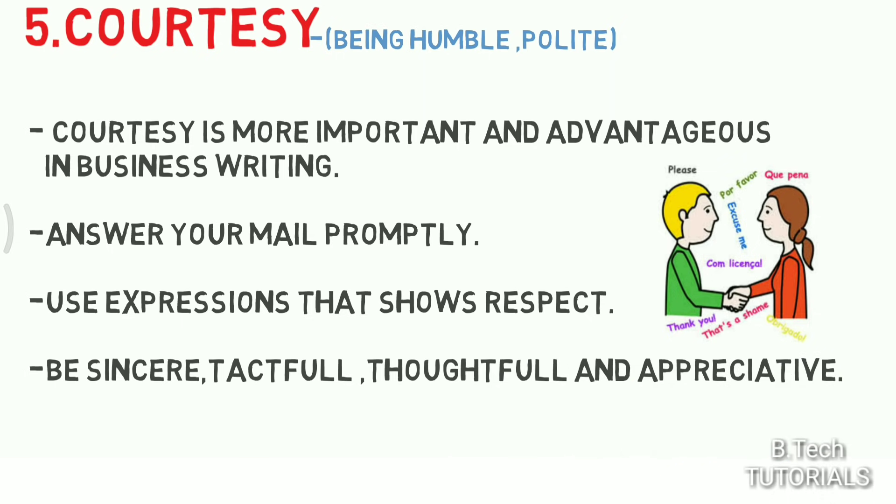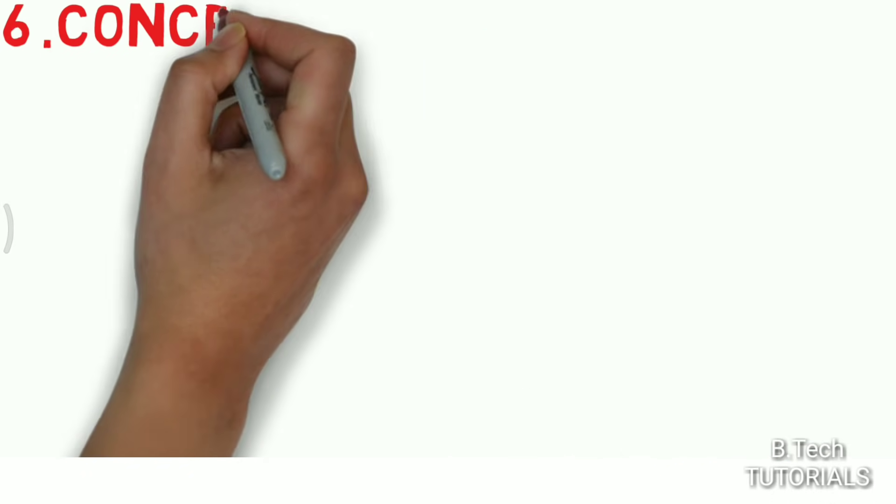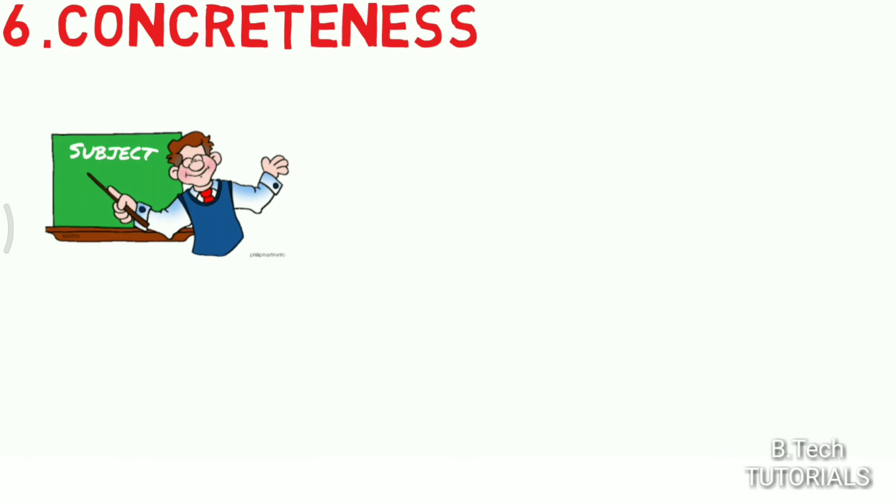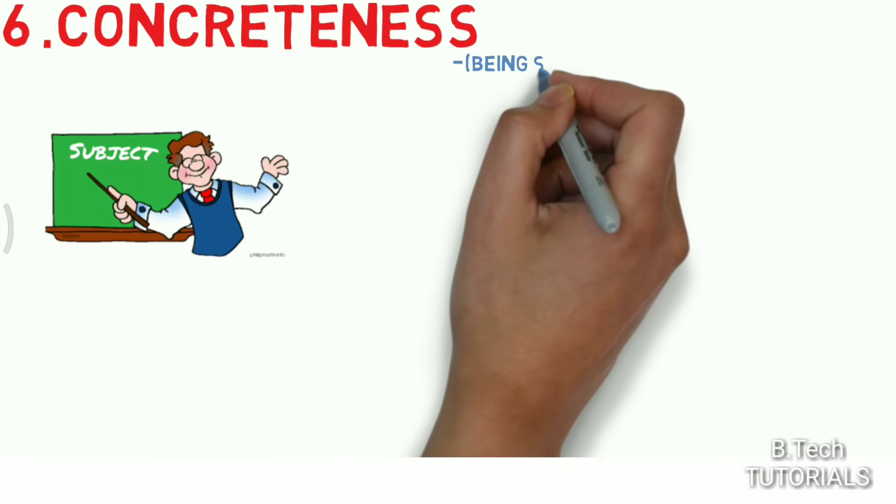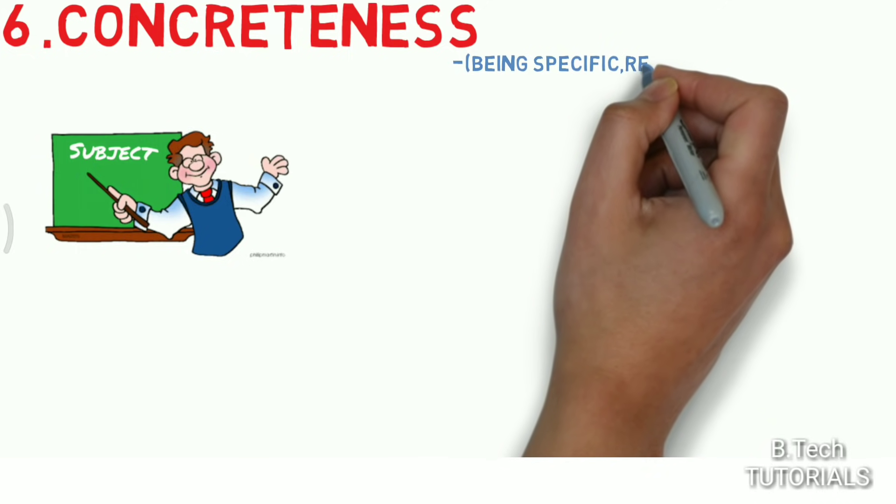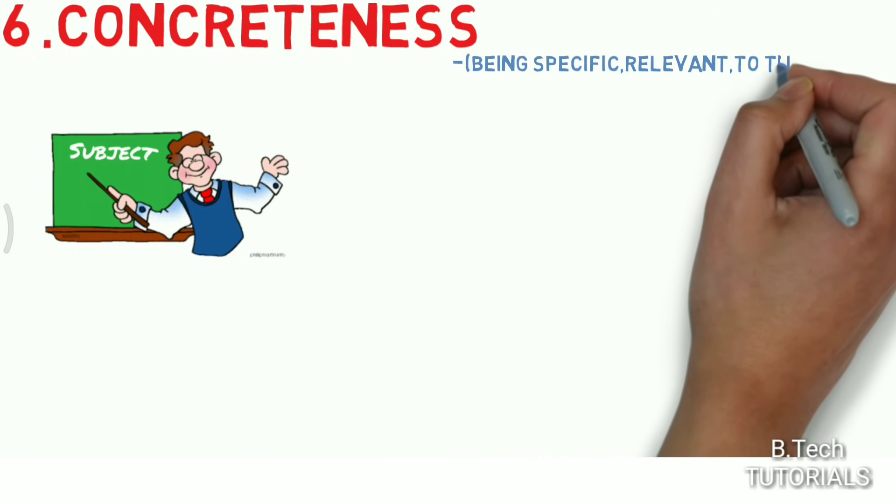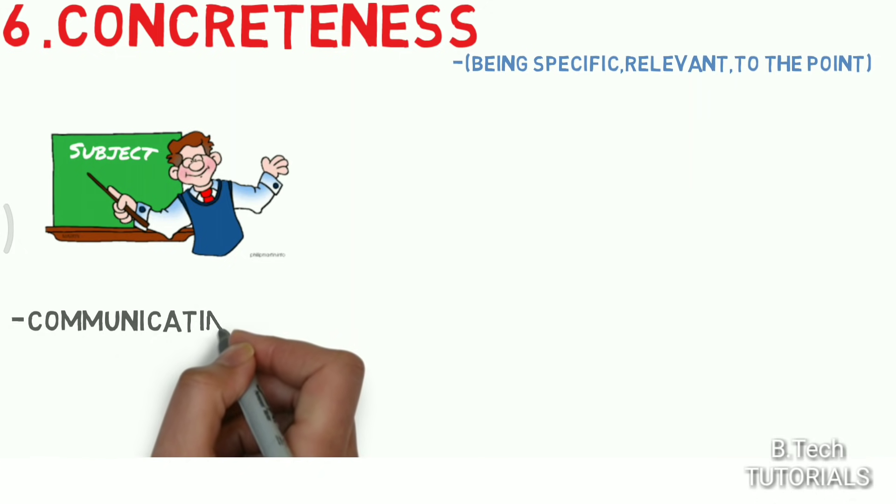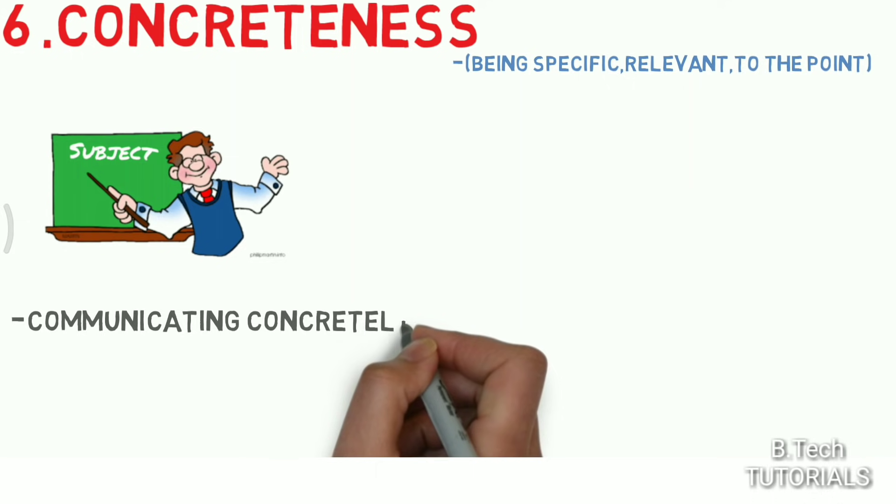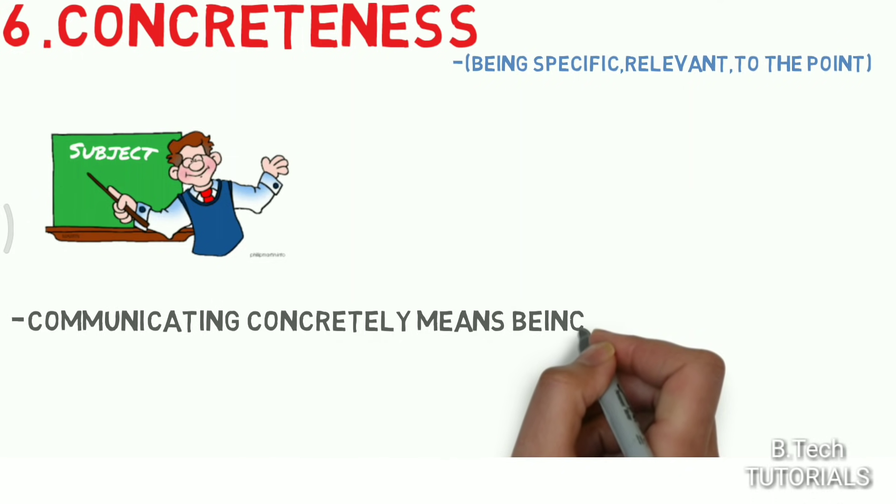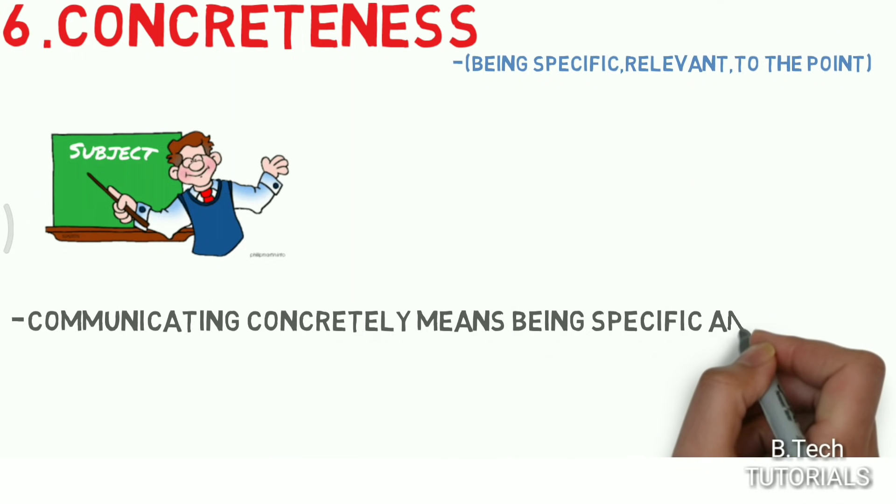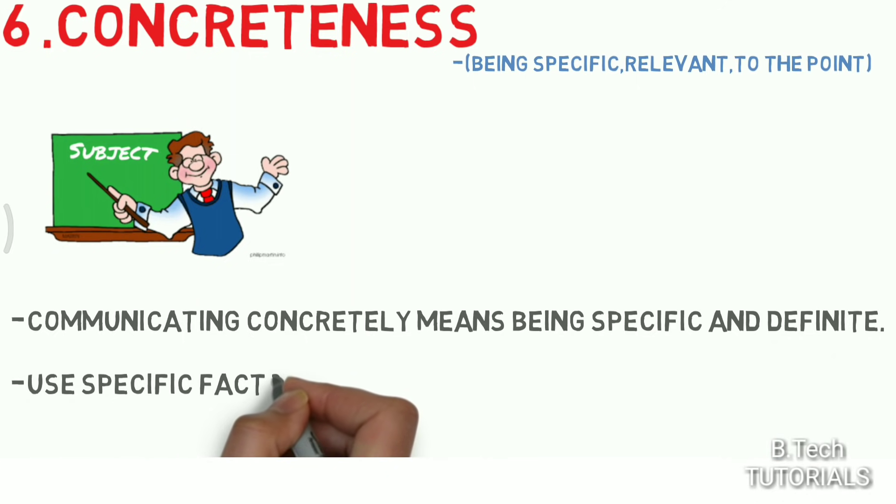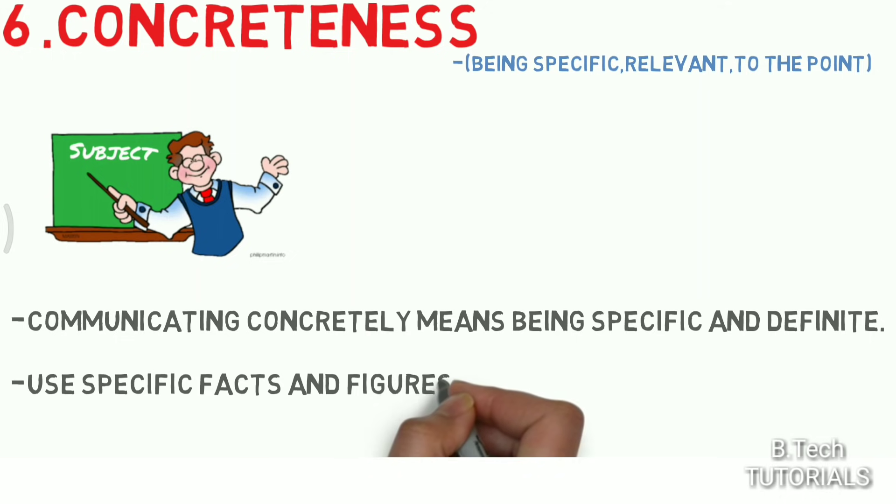The sixth C is concreteness. It means our data, what we are saying or writing, should be relevant to the point and specific. Communicating concretely means being specific and definite. The most important point is to use specific facts and figures in concreteness.